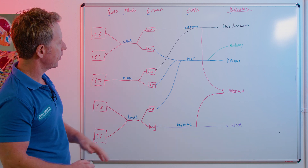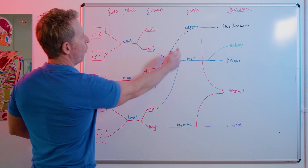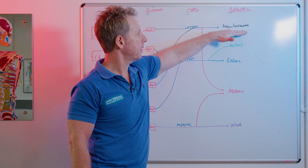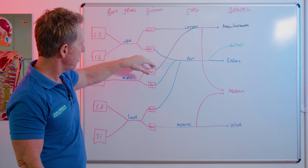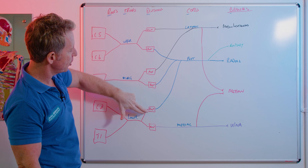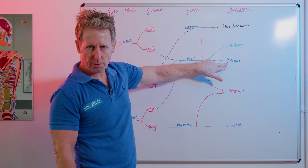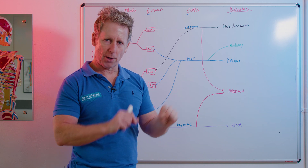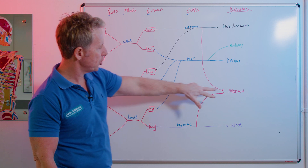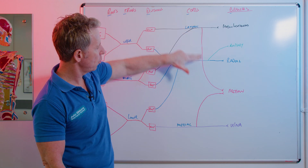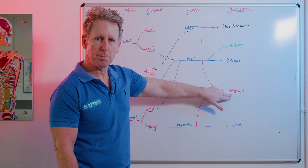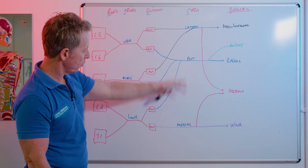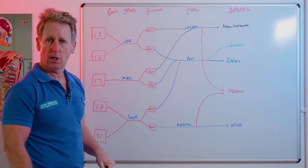The anterior division of the upper and middle trunk forms a cord called the lateral cord, which eventually becomes the musculocutaneous nerve. The posterior divisions of all three trunks form the posterior cord, which becomes mainly the radial nerve, with a smaller branch — like a side light on a car — called the axillary nerve. The median nerve is a split from both the lateral cord and the medial cord. And the ulnar nerve is a continuation of the medial cord, coming from the anterior division of the lower trunk.